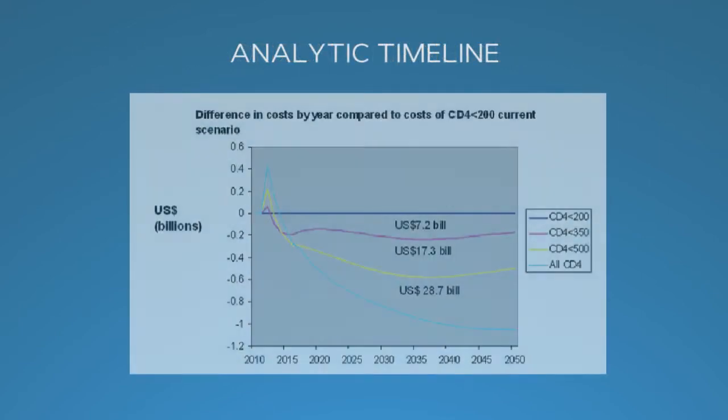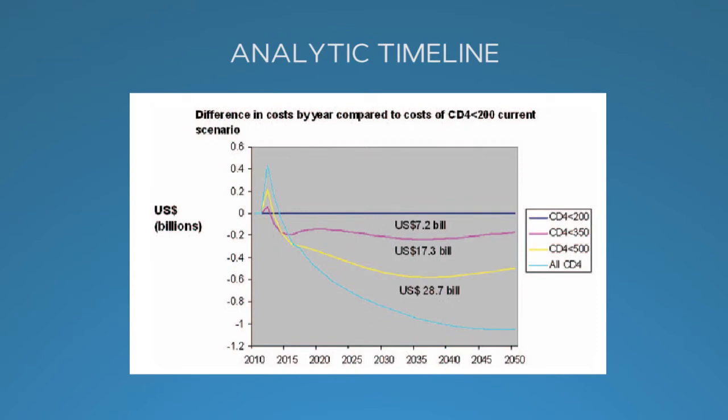This figure shows the importance of time frame. In this analysis, we looked at the annual net cost of expanding antiretroviral treatment in South Africa to HIV-infected individuals who are earlier in disease, with higher CD4 counts. In the first few years, earlier treatment strategies cost more. However, by seven years, the earliest strategy costs the least. This is due to savings from HIV infections averted via viral suppression and thus reduced infectivity. The annual savings continue to grow.